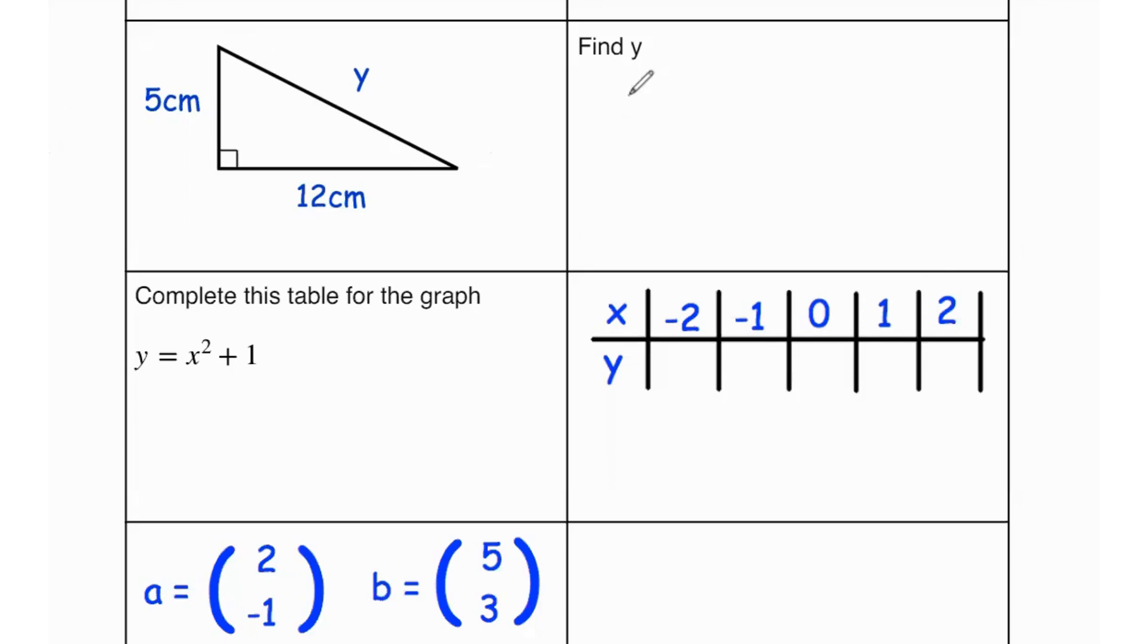So we can easily use Pythagoras where hypotenuse squared equals to opposite squared plus adjacent squared. So that's going to be y squared equals to 5 squared plus 12 squared which is 25 plus 144. That equals to 169. Square root both sides to find the value of y. That's going to be 13 centimeters.